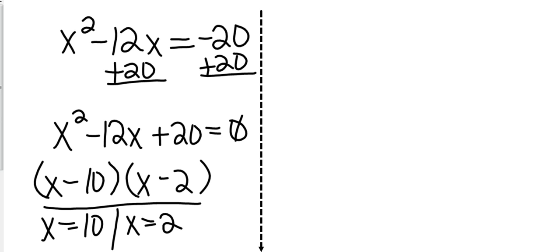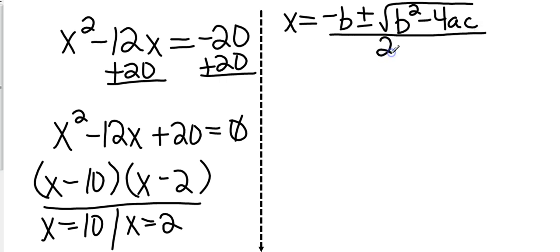First, we need to write down the quadratic formula. x equals negative b plus or minus square root b squared minus 4ac all over 2a. Now, from our equation, let's identify our a, b, and c. Our a is the number in front of the x squared, which is 1. Our b is the number in front of the x, which is negative 12. And our c is the number that stands alone, which is 20.